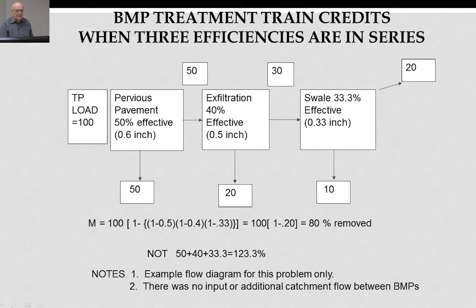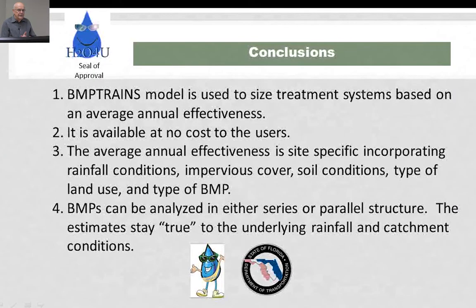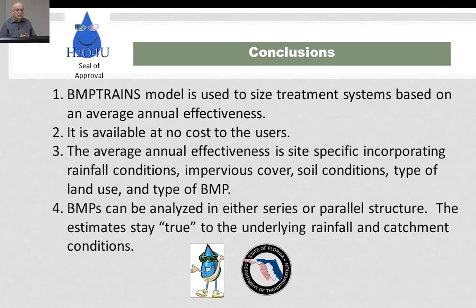In conclusion, the BMP trains model lets you size treatment systems based on average annual efficiency, at no cost to the user. The average annual effectiveness is site-specific, incorporating rainfall conditions, impervious cover, soil conditions, type of land use, and type of BMP. You can configure systems either in series or parallel, and the program ensures estimates stay true to the underlying rainfall and catchment characteristics.